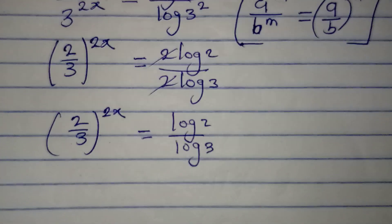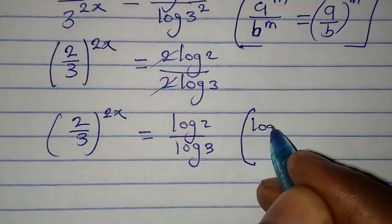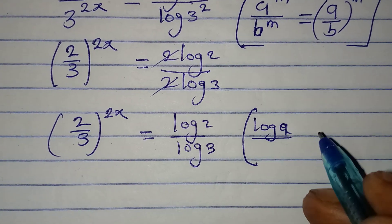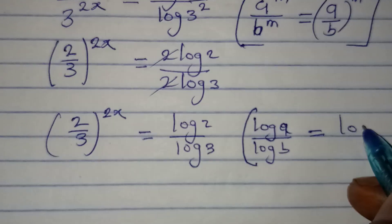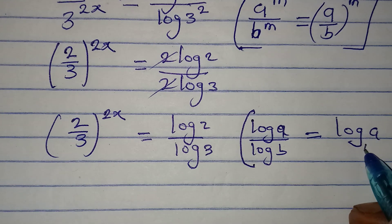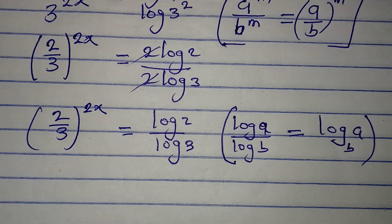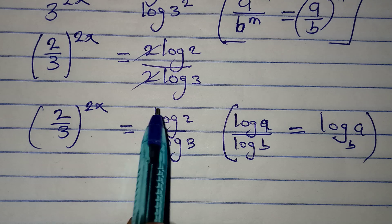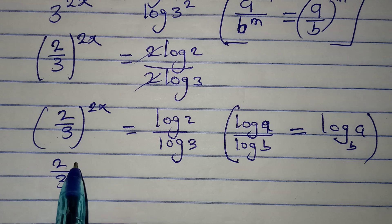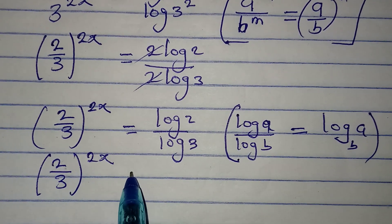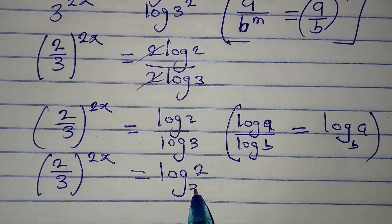Now there's a property about logarithms: log a over log b is the same thing as log a to base b. Because of that, I'm going to work on this log here. So I have (2 over 3) to the power of 2x equal to log 2 to the base of 3.